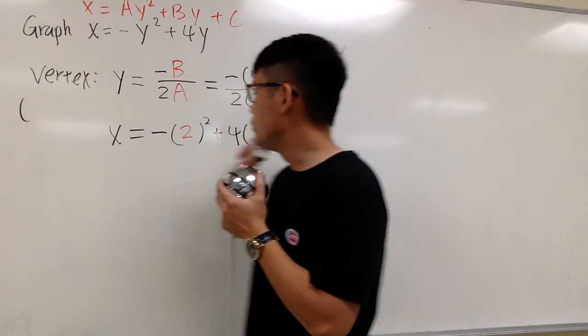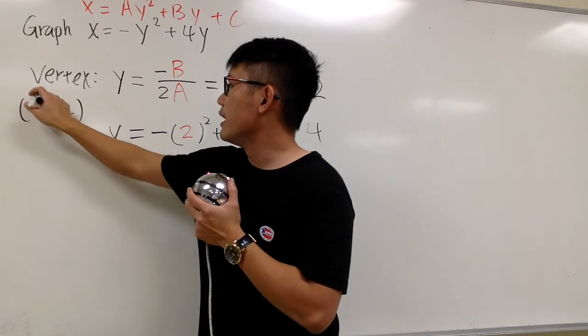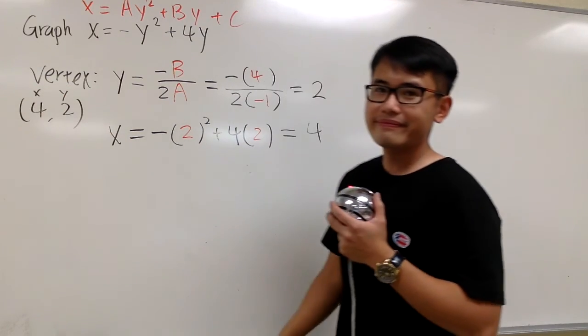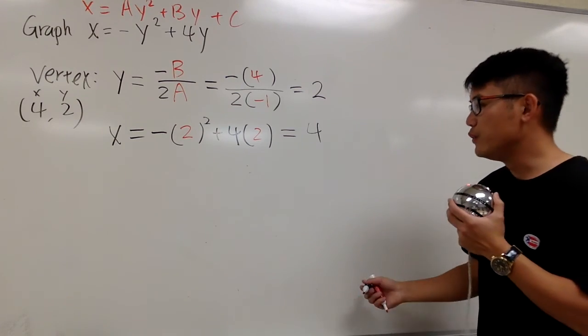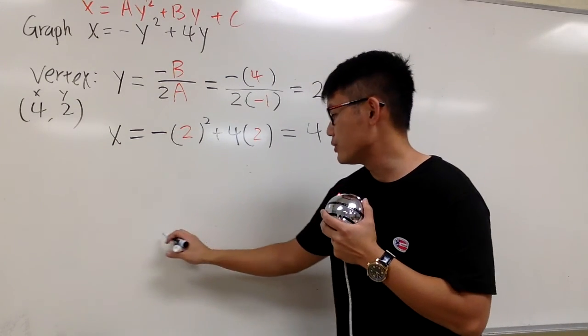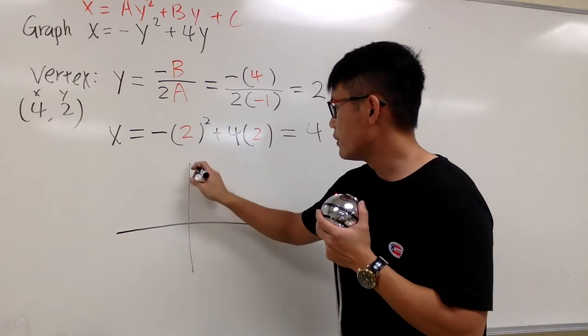So keep this in mind. You still have to put on the x value first: 4, 2, the x value and the y value. So we can kind of get to work already. If you would like to just have a sketch, this is what you can do.